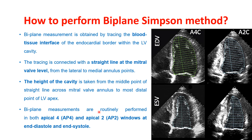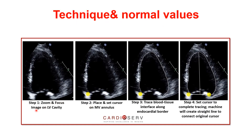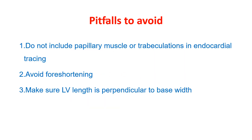Biplane measurements are routinely performed in both apical 4-chamber and apical 2-chamber views at end-diastole and end-systole. The steps are: step one, zoom and focus on the left ventricular cavity; step two, place the cursor on the mitral valve annulus; step three, trace the blood-tissue interface along the endocardial border; step four, set the cursor to complete the tracing and the machine will create a straight line to connect the original cursor.